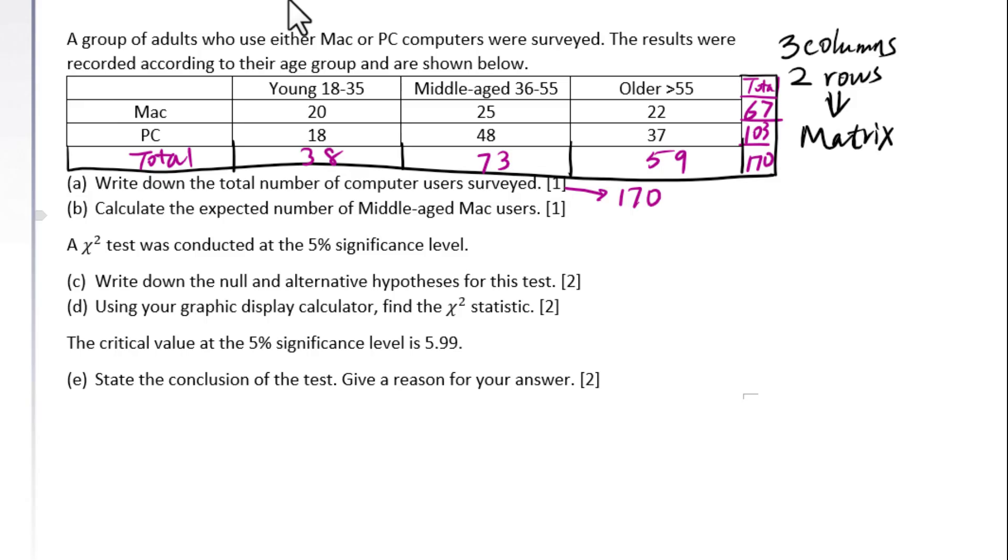Middle-aged Mac users is this. The vertically total is 73. Horizontally total is 67. Then you divide it by the total number here, 170. 73 times 67 divided by 170 equals 28.8.